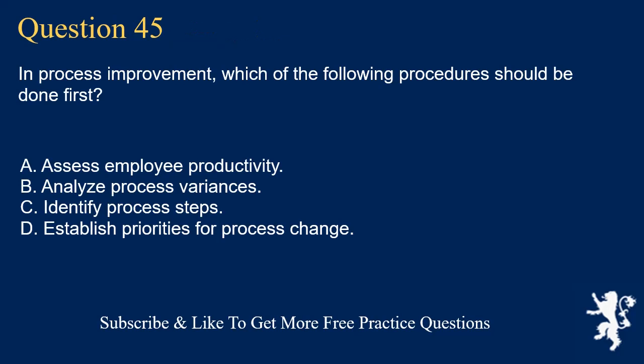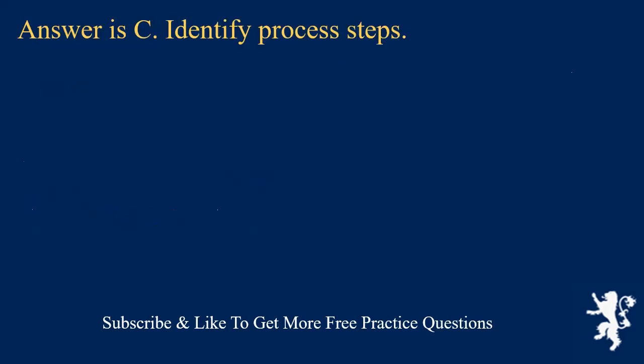Question 45. In process improvement, which of the following procedures should be done first? A. Assess employee productivity. B. Analyze process variances. C. Identify process steps. D. Establish priorities for process change. Answer is C. Identify process steps.